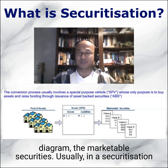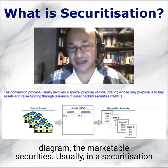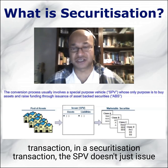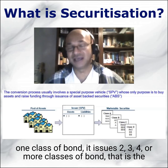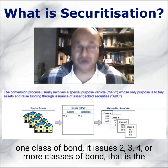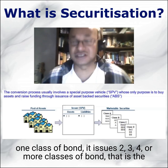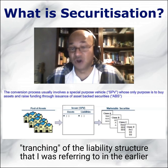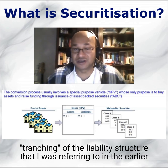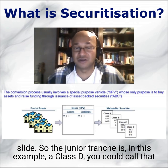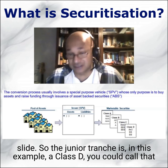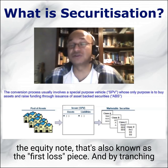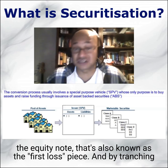In a securitization transaction, the SPV doesn't just issue one class of bond — it issues two, three, four, or more classes of bond. This is the tranching of the liability structure. The junior tranche — in this example, Class D — is also known as the equity note or the first loss piece.